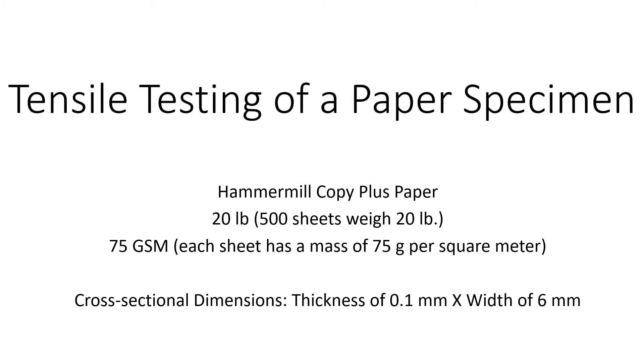In this video, we will demonstrate the tensile testing of a paper-based specimen and estimate its ultimate tensile strength. The paper used is Hammermill Copy Plus paper, and the cross-sectional dimensions will be 6 mm in width and 0.1 mm in thickness.